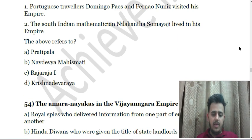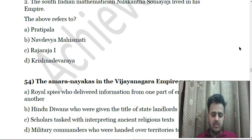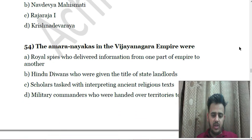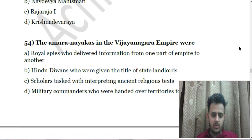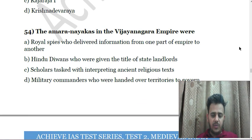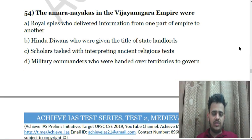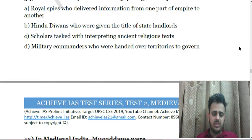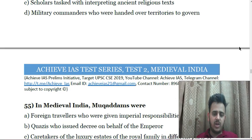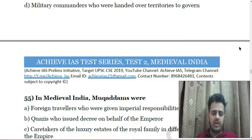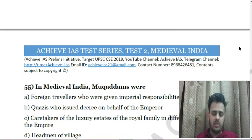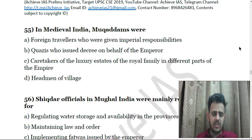Next: The Amranaikas in the Vijayanagara empire were — A. Royal spies who delivered information from one part of the empire to another; B. Hindu divans given the title of state landlords; C. Scholars tasked with interpreting ancient religious texts; D. Military commanders who were handed over territories to govern.